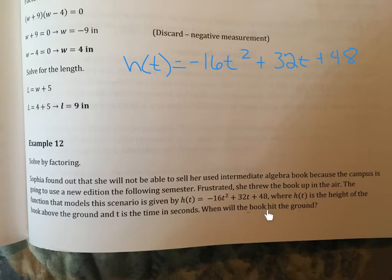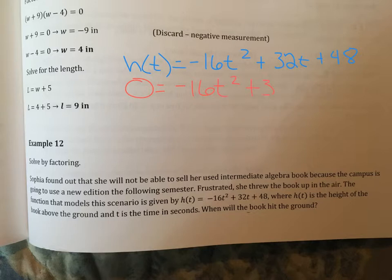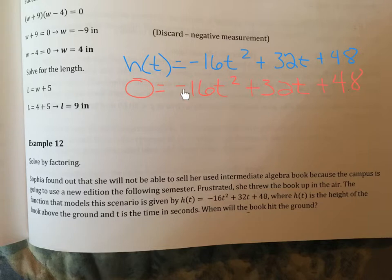When will the book hit the ground? When it hits the ground, the height is zero. So we put zero in for height, which makes our quadratic equation equal to zero, and we can now factor it to solve. This is a trinomial where we might use the AC method, but it's better to get out a GCF first.